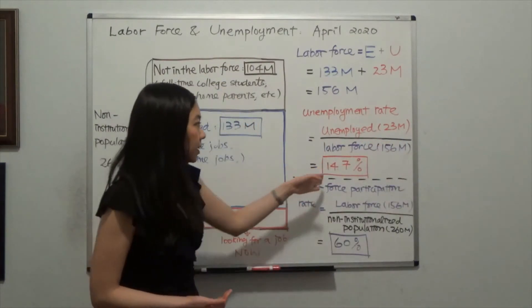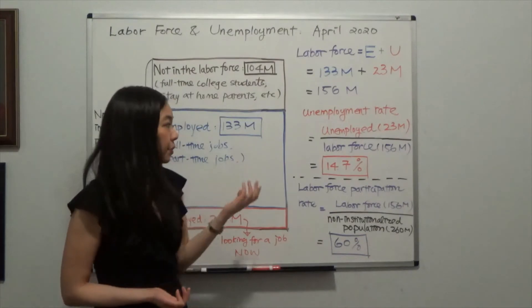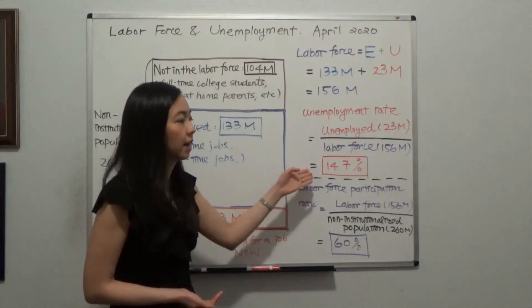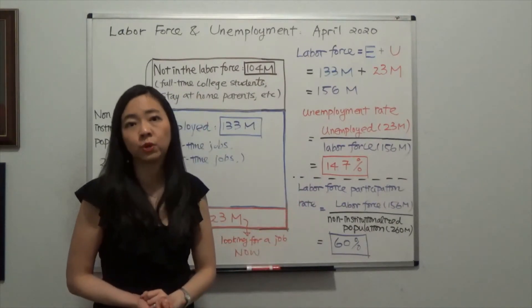After you calculate, you'll find that the unemployment rate in April is 14.7%. That's a very high number, in fact the highest since the Great Depression.